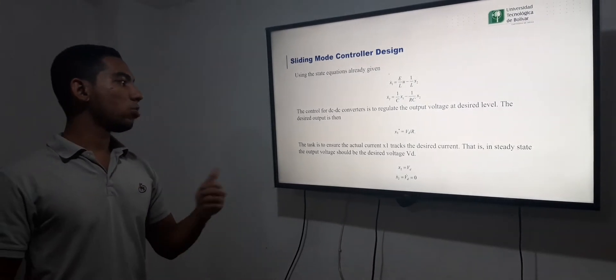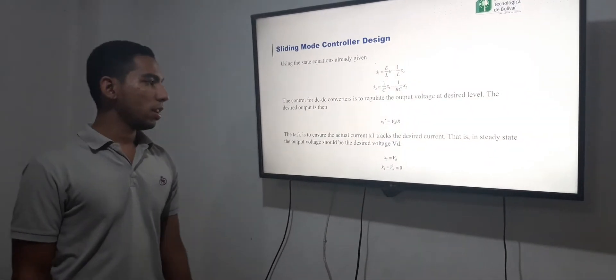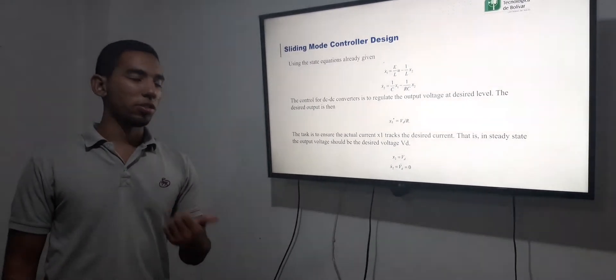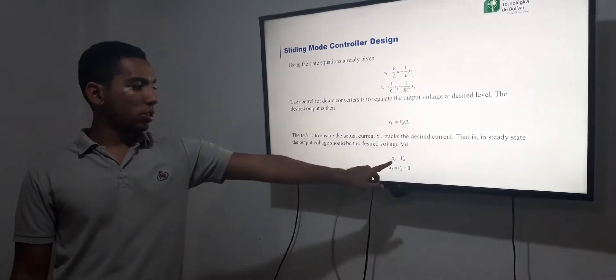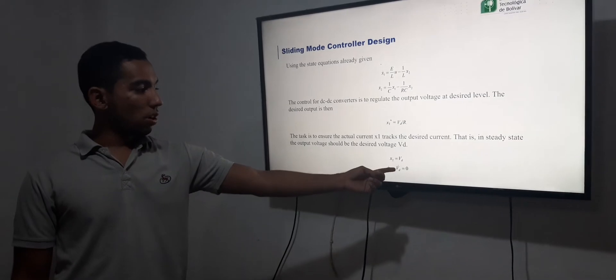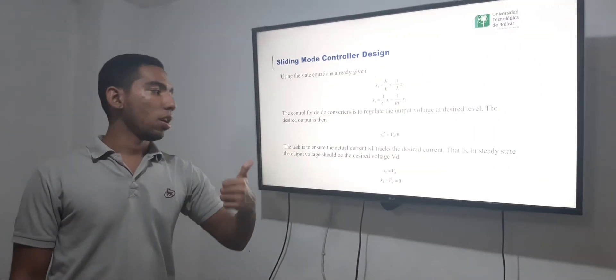The task is to ensure the actual current X1 tracks the desired current. That is, in a steady state, the output voltage should be the desired voltage. The voltage of the capacitor is equal to the desired voltage if this is OK.